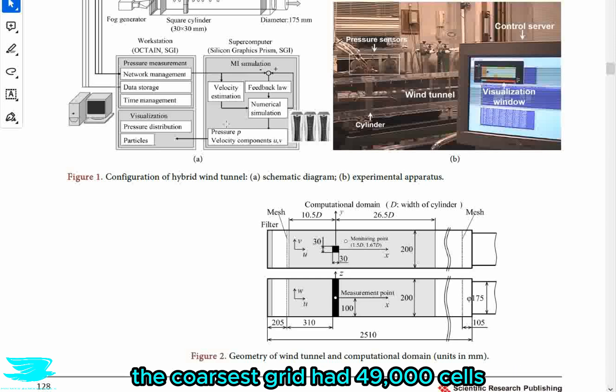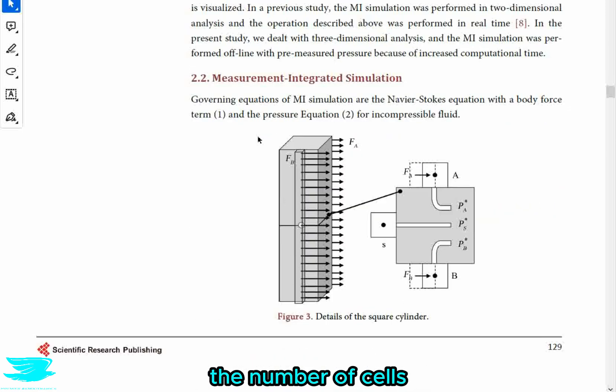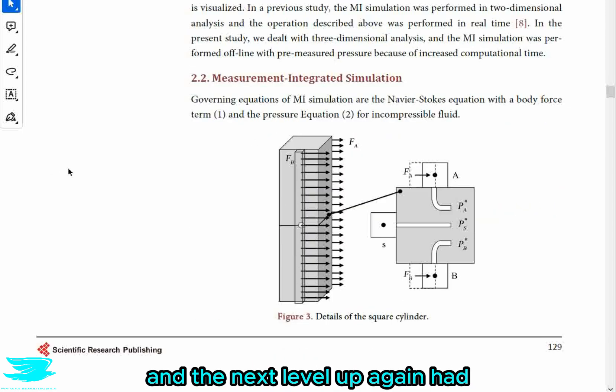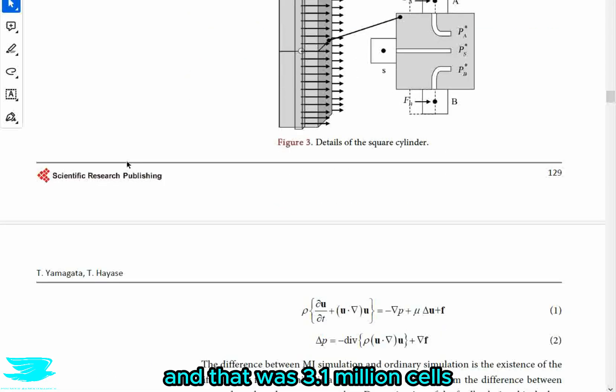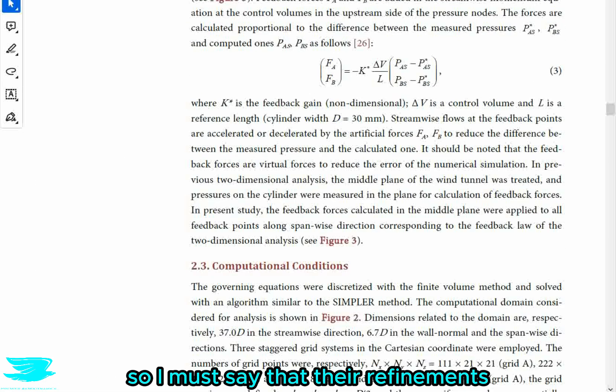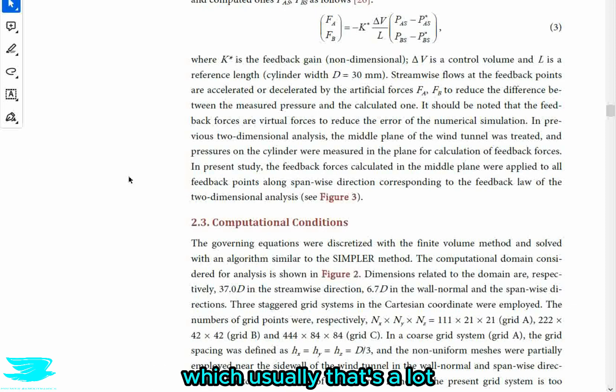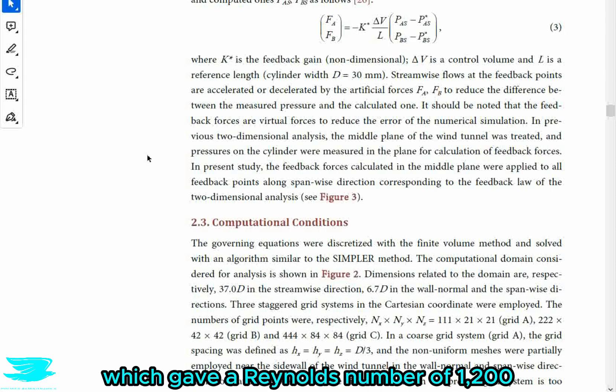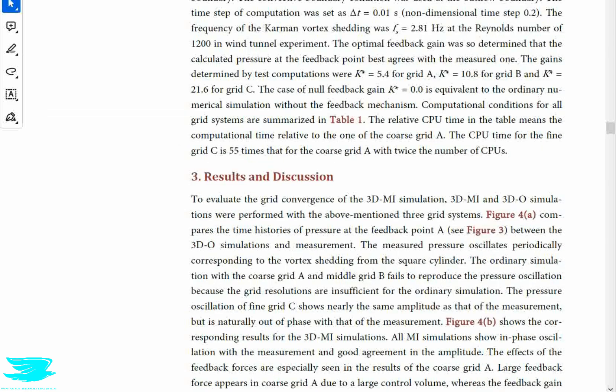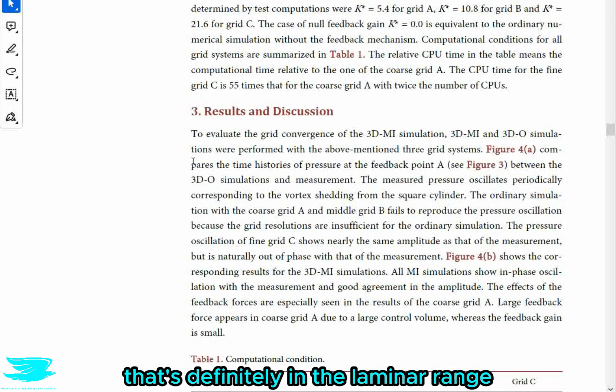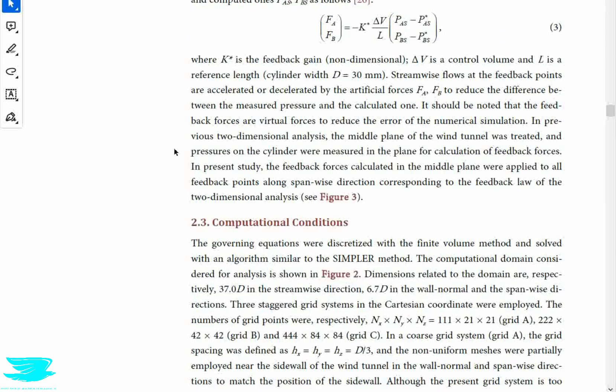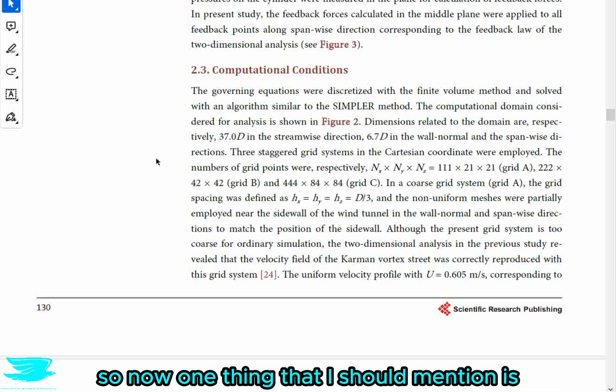And they looked at three different grid densities. The coarsest grid had 49,000 cells. The next level up had eight times the number of cells at 400,000 cells. And the next level up again had eight times again, and that was 3.1 million cells. So I must say that their refinements were massive jumps each time. Each time they increased the total number of cells by a factor of eight, which usually that's a lot. Anyway, the velocity was set at 0.6 meters per second, which gave a Reynolds number of 1,200. So that's quite low. That's definitely in the laminar range.